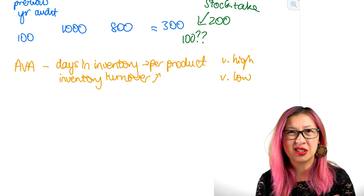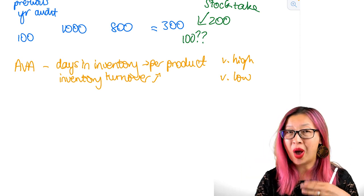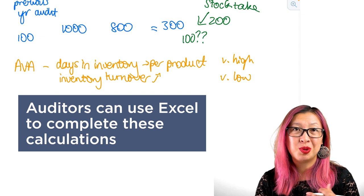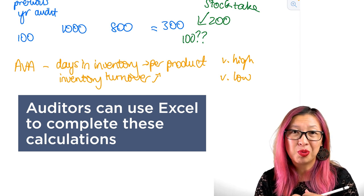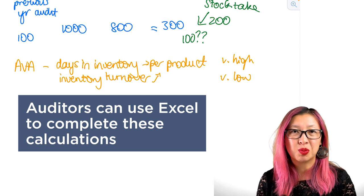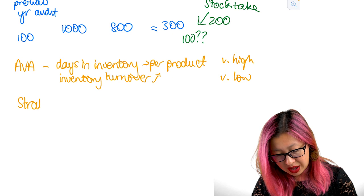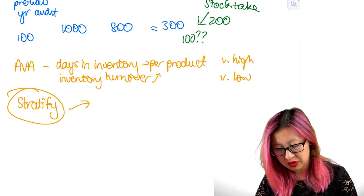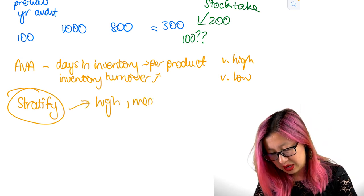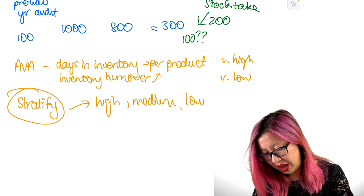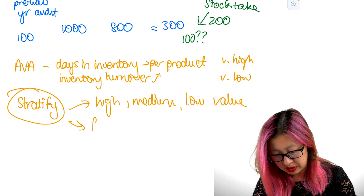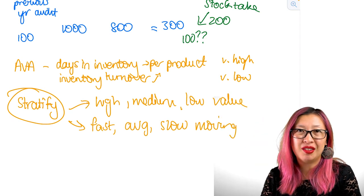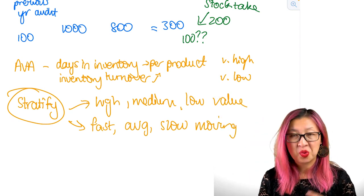So you can actually calculate one of these ratios for all of the product lines. And then if you're in Excel, just do a sort. And you'll be able to find what's moving the slowest, what's moving the fastest. And that can also help you get some insight into auditing that specific account. Because remember, rather than checking your entire population, a really smart idea is to stratify. So then you could have potentially high, medium, and low value items. You could stratify based on fast, average, and slow moving items to help you identify obsolete inventory. So work smarter rather than harder here.